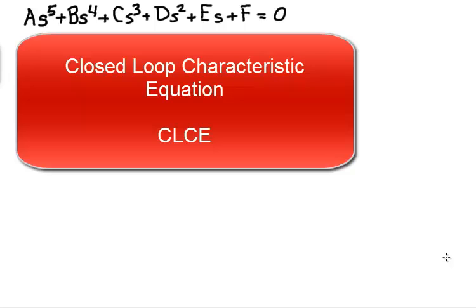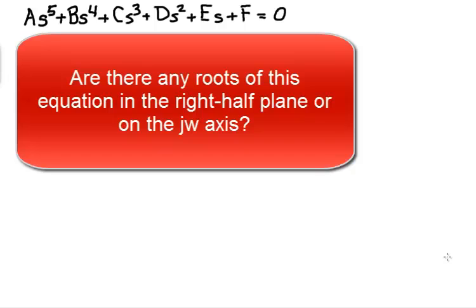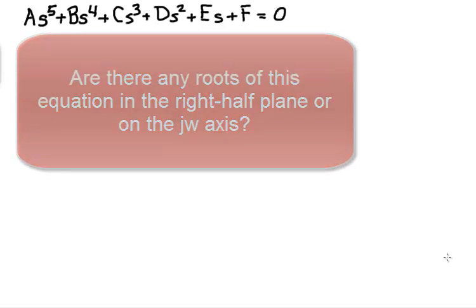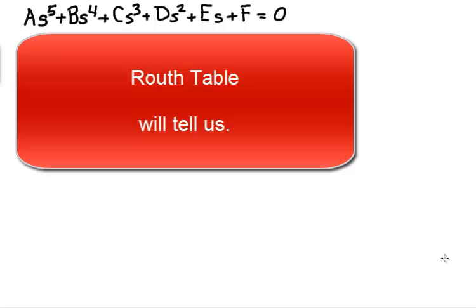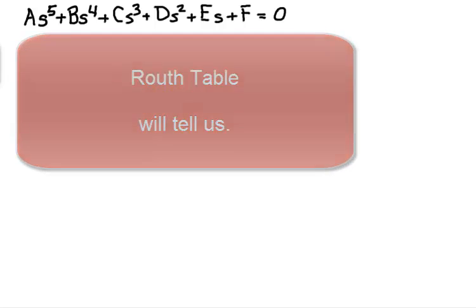Here is a closed loop characteristic equation. Are there any roots of this equation in the right half plane or on the j omega axis? We'll use the Routh table to answer that question.